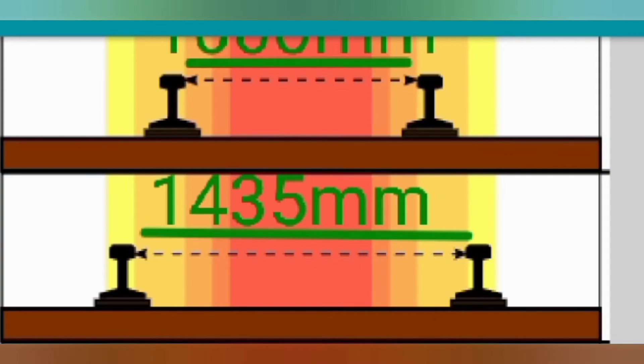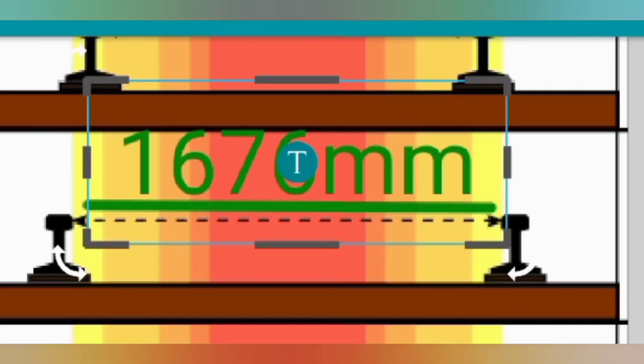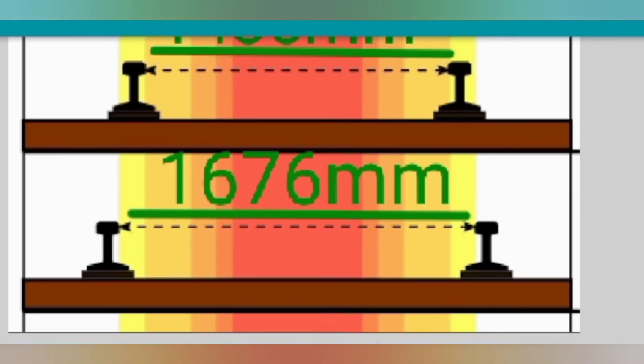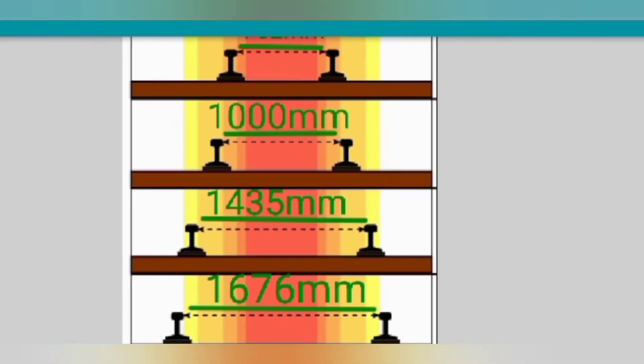If the gauge is 1676 mm, it is broad gauge. The mostly used in Indian railways are broad gauge only.